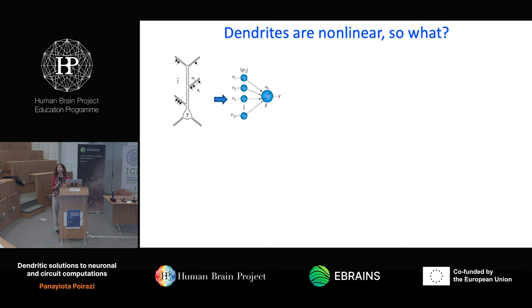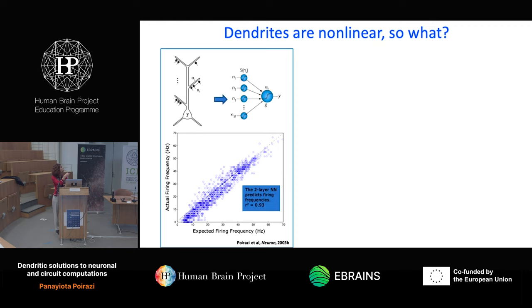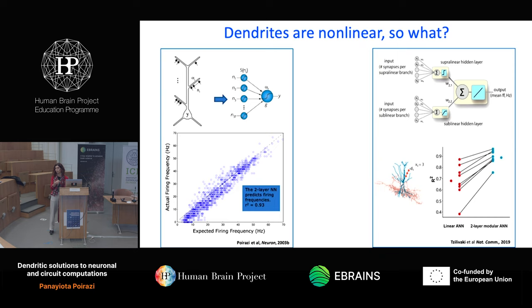We asked: can we describe with this simple mathematical model the firing rate of a detailed computational neuron? The answer was yes. We could generate many inputs to these detailed pyramidal neurons and use a mathematical abstraction to predict the output with very high accuracy — a correlation coefficient very close to one. Very recently, we repeated the same exercise for the interneurons I just showed you.